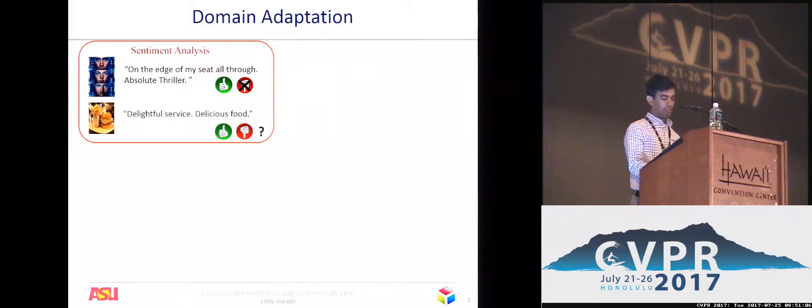In unsupervised domain adaptation, we have a labeled source dataset and an unlabeled target dataset. The goal is to estimate the target labels given that the source and target distributions are different.